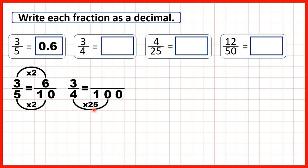If you think about counting in twenty-fives: twenty-five, fifty, seventy-five, and the fourth multiple is one hundred. So what we do to the denominator, we do to the numerator as well. With three times twenty-five — counting twenty-five, fifty — the third multiple of twenty-five is seventy-five. So three-quarters is equivalent to seventy-five hundredths.